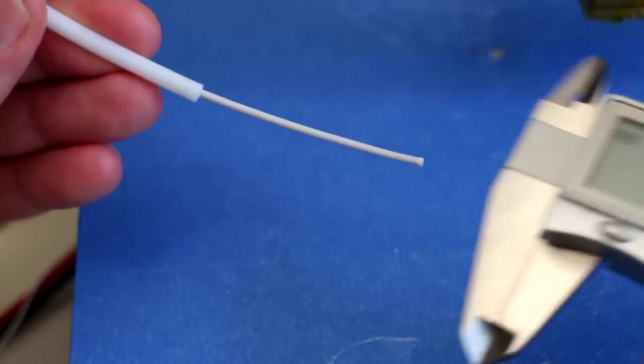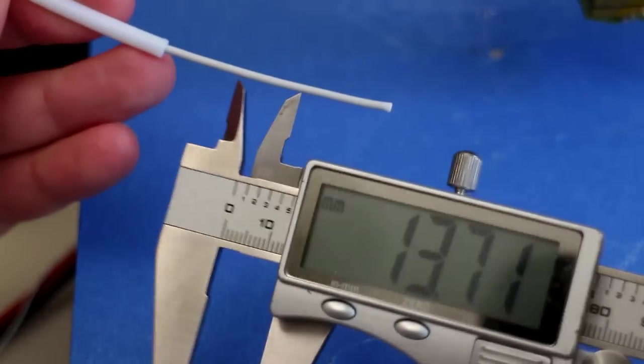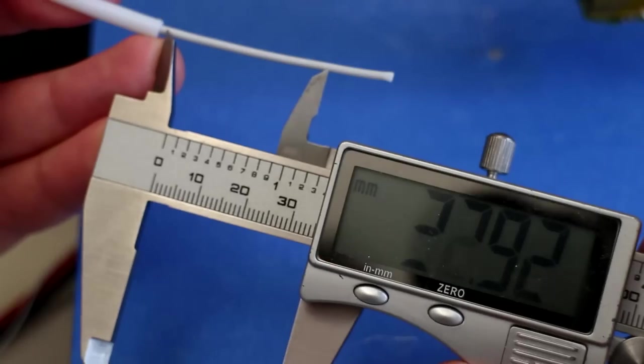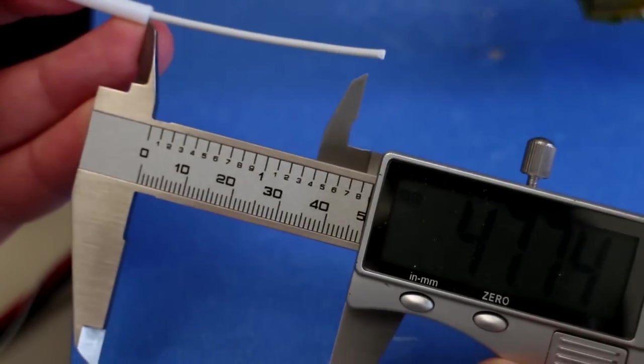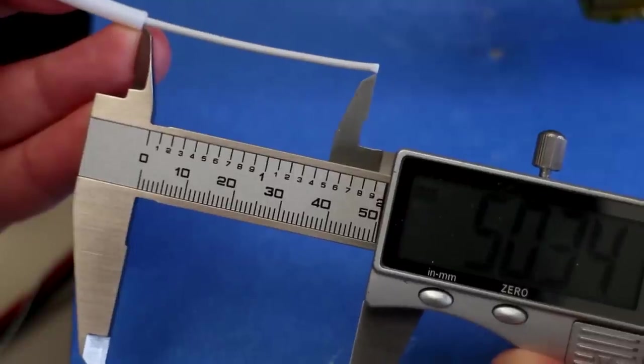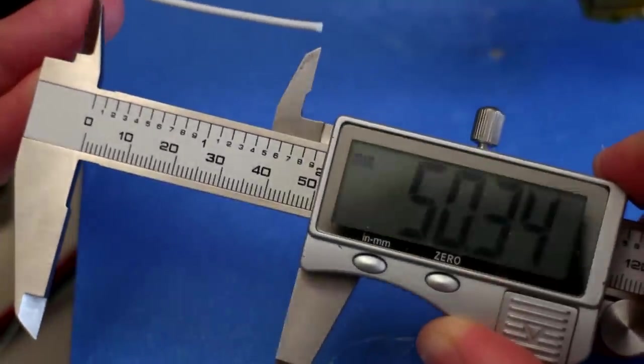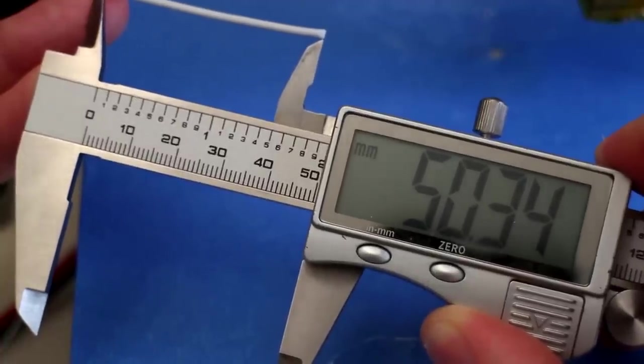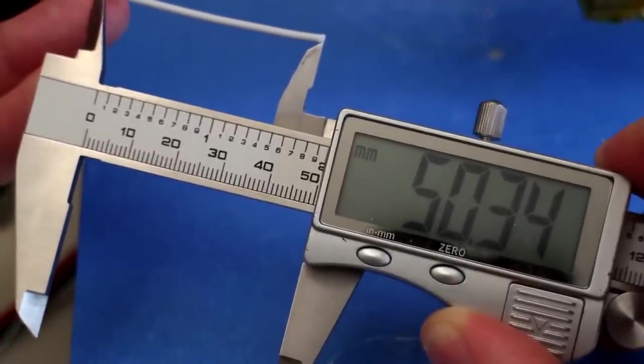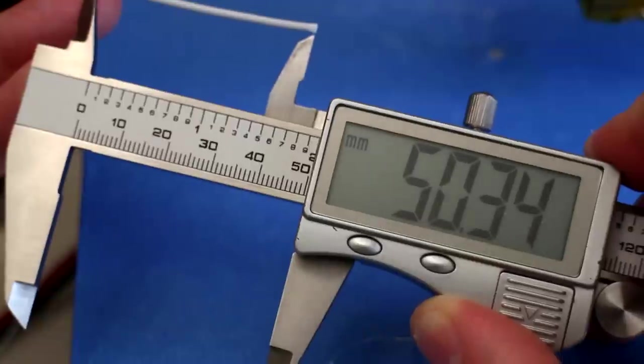Measure the extruded filament with a digital caliper. We're looking for 50 mm in this result. Looks like we're just a bit over. We're at 50.3 or so. So let's make another pass at the e-steps in Marlin.